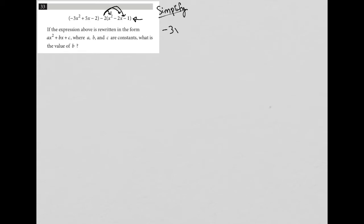I'm going to just rewrite this so it's easier to follow along with what I'm doing. So negative 3x squared plus 5x minus 1 and then minus 2, and then minus 2 times x squared minus 2x minus 1.